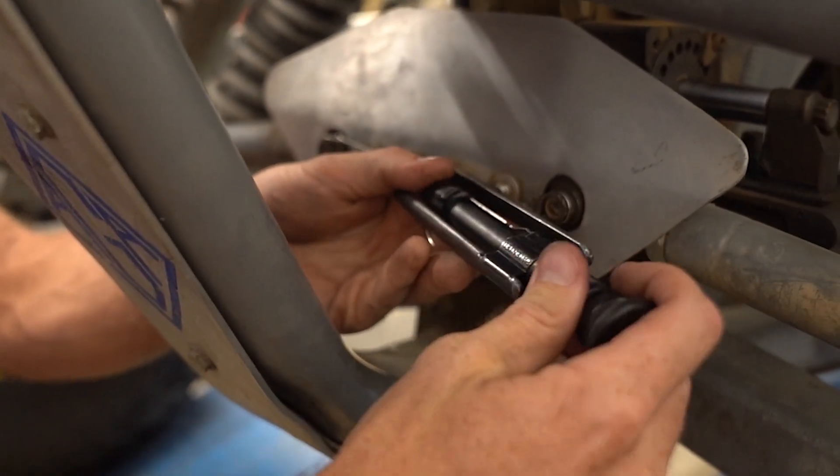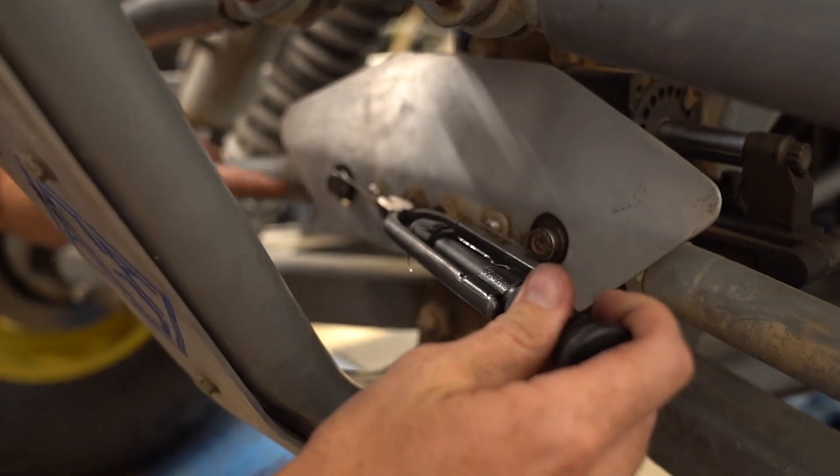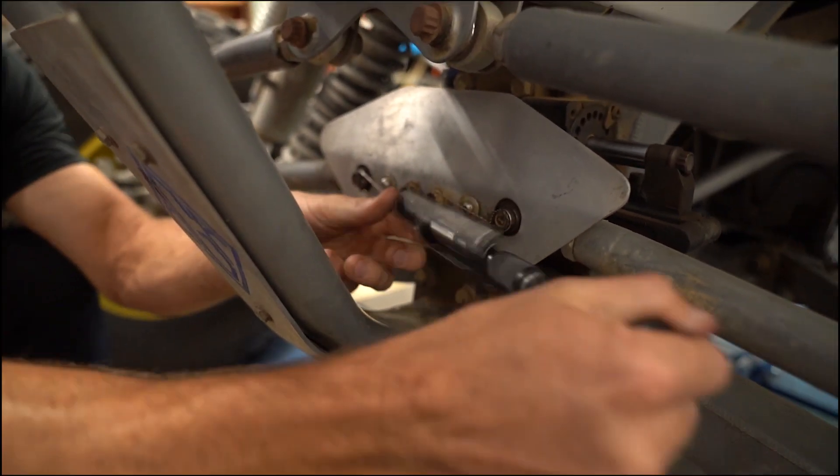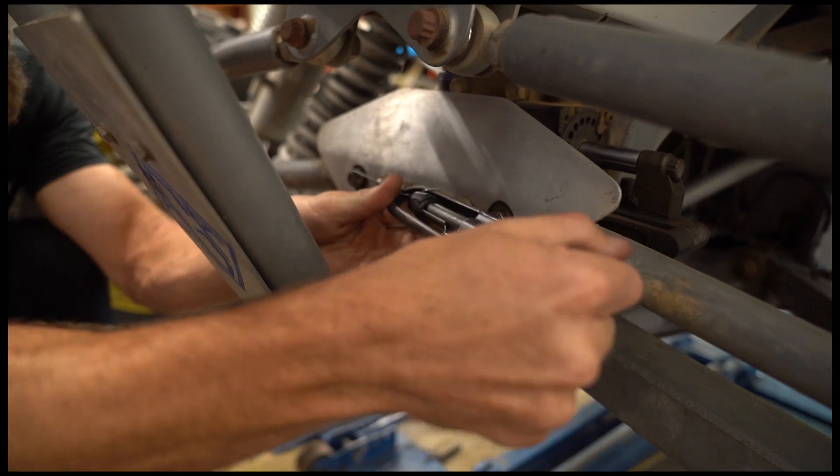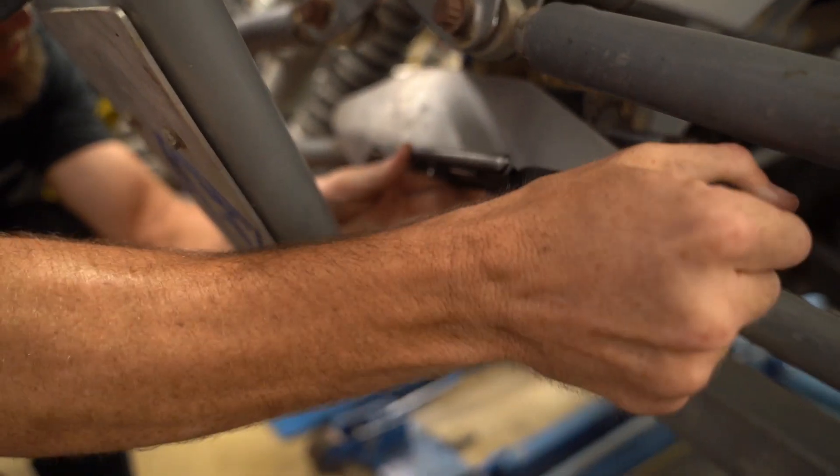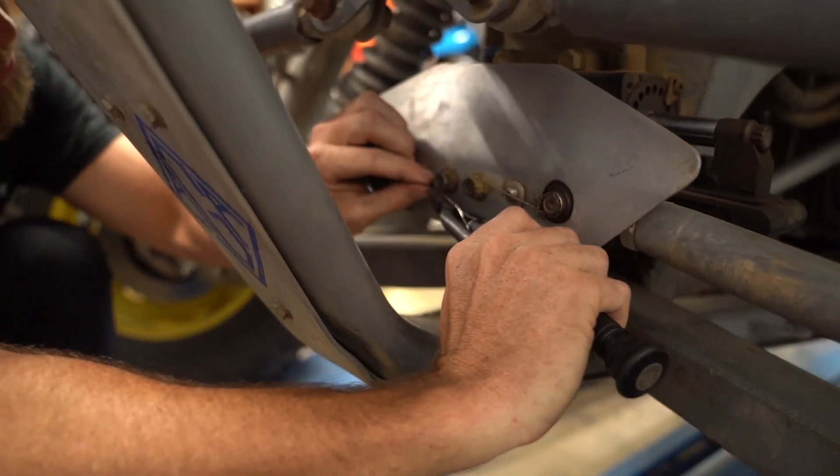So we have the pliers adjusted so when it tightens, it's actually going to spin into the bolt. And generally, you're looking for eight to ten turns per inch.